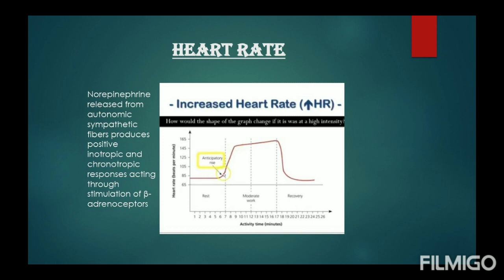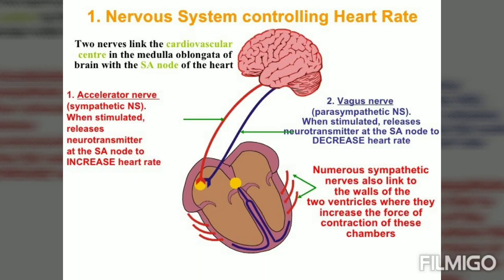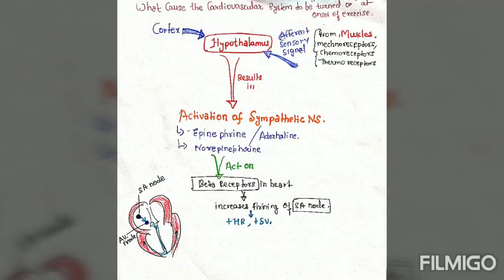Now look here at the nervous system controlling the heart rate. Our heart rate increases through neurotransmitters released by the activation of the sympathetic nervous system. The sympathetic nervous system stimulates our ventricles so that contractility increases and stroke volume increases in response to exercise.